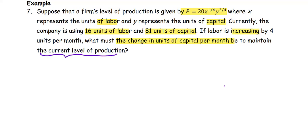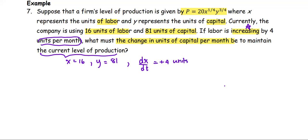The current level of production is at x, which is the labor, equals 16; y, which is the capital, equals 81. Labor is increasing — that is the rate of change of labor with respect to time, dx/dt. The time is in months. Increasing means positive: 4 units per month. The question asks for the change in units of capital y per month, or dy/dt, at the current level of production where x equals 16 and y equals 81.